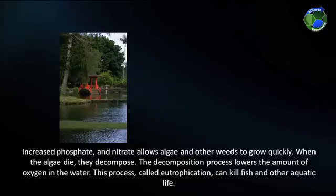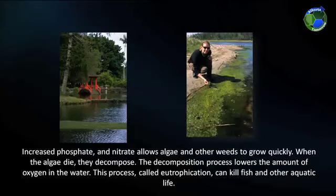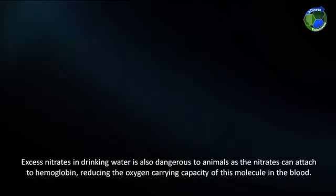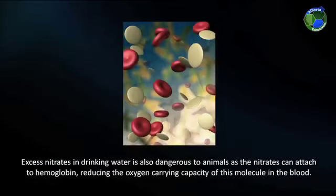Increased phosphate and nitrate allow algae and other weeds to grow quickly. When the algae die, they decompose. The decomposition process lowers the amount of oxygen in the water. This process, called eutrophication, can kill fish and other aquatic life. Excess nitrates in drinking water is also dangerous to animals as the nitrates can attach to hemoglobin, reducing the oxygen carrying capacity of this molecule in the blood.